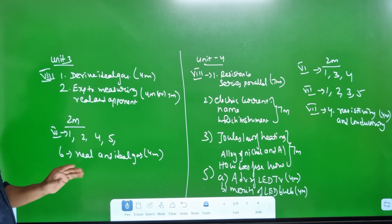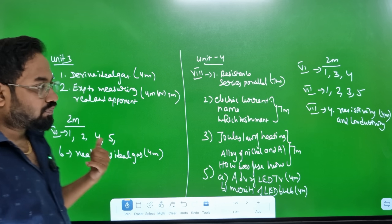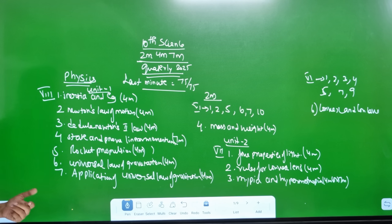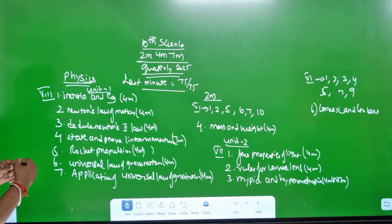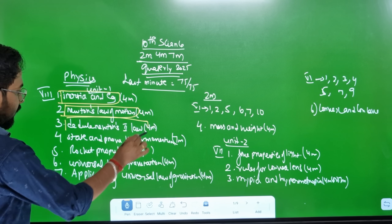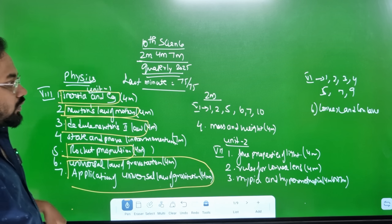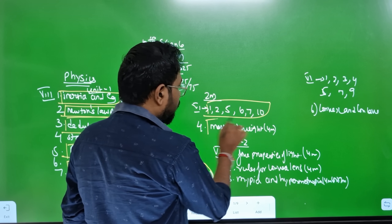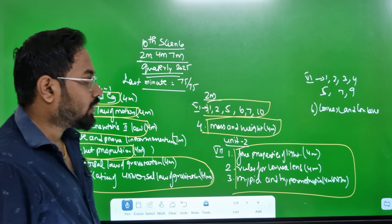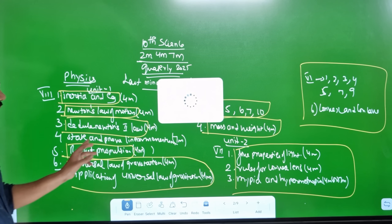Let's study the ideal gas equation in 3 minutes. Expression for measuring real and apparent is 4 marks or 7 marks. We are talking about a lot - inertia, Newton's second law, rocket propulsion, Universe is 2. They are not compromising. We are learning 2 marks. First lesson is 2 marks, 4 marks, 7 marks. Second lesson is 3 marks - we are learning the components.